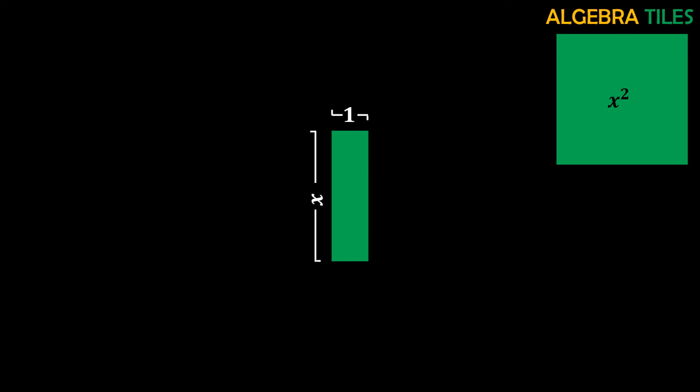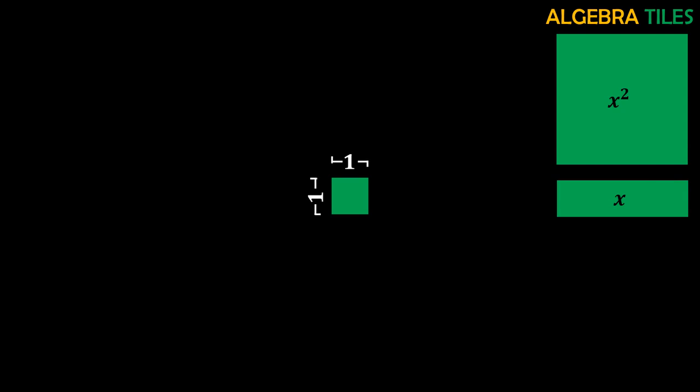Next you have this bar, which has a length of one unit and a width of x units. When you multiply both sides you get x times one equals x, so this is the tile with area x. Use this tile whenever you have x in your expression or equation. Last, you have this smallest square where all sides are one unit. Multiplying one times one gives area equals one, so whenever you have a constant term in your polynomial or expression you use this tile.